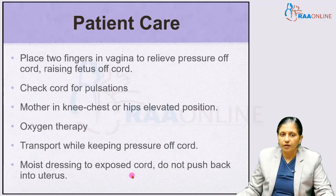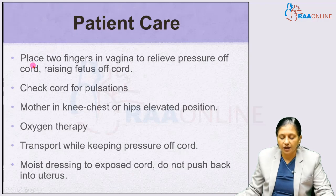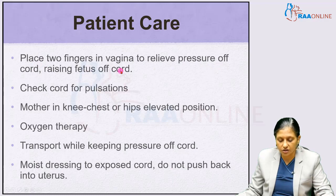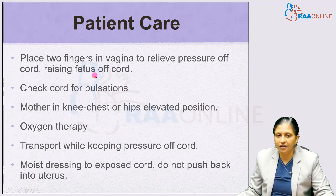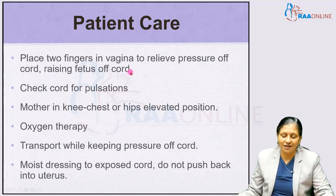So what should we do? Place the patient in the lying down position and insert two fingers into the vagina to relieve the pressure off the cord and raise the fetus off the cord. Do not let the baby's head press on the cord, as that will further compress it. The fetal head should be lifted off the cord by placing fingers in the vagina and lifting the fetal head away from the cord.